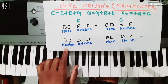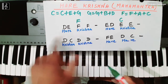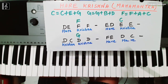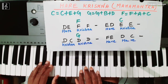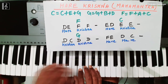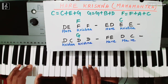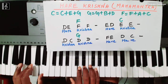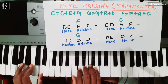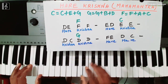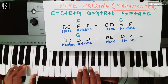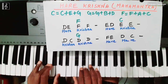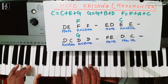Next चलते हैं third line में। Third part में D के साथ लगाना है G chord। So: D C D D — with G chord। अब इन तीनों parts को play करने की कोशिश कीजिए: D E F F, E D E E, D C D D।